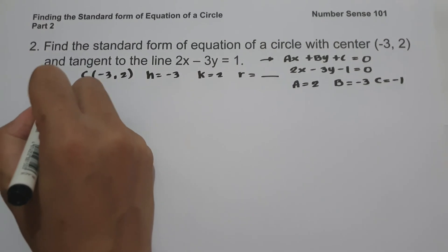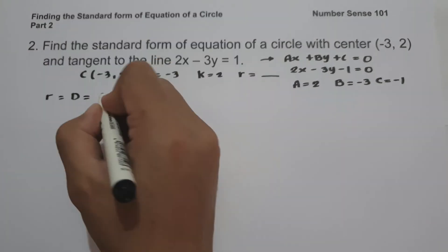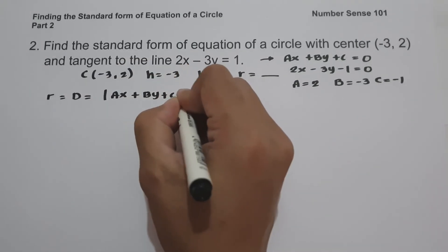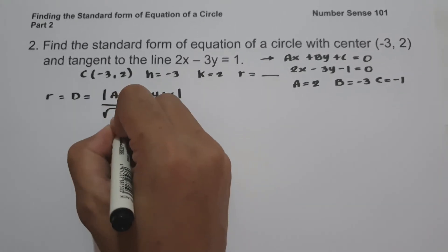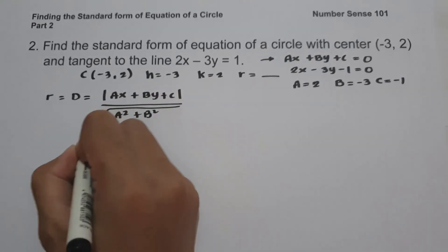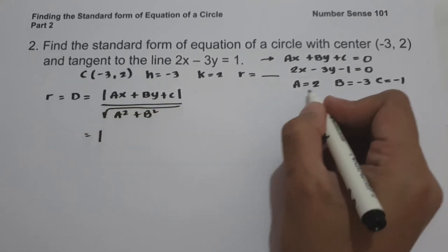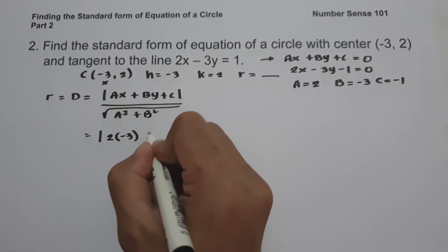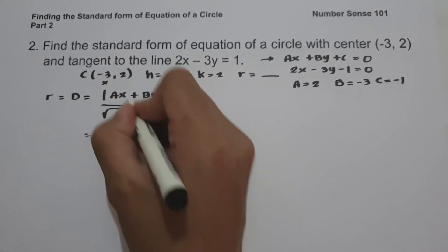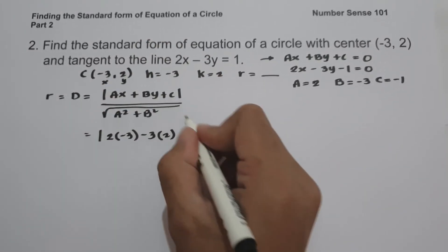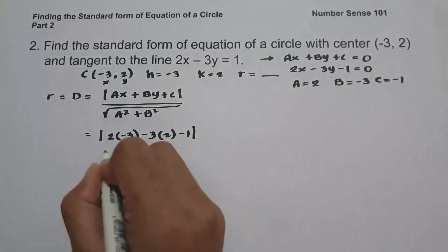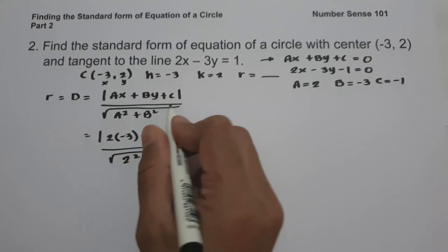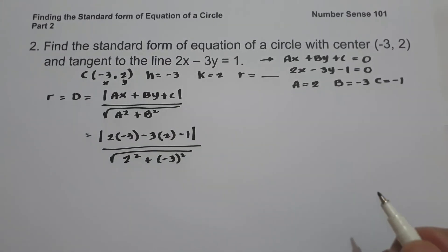To find the radius, we use the formula for the distance between a line and a point: absolute value of ax plus by plus c, all over square root of a squared plus b squared. Substituting: a equals 2, x equals negative 3, b equals negative 3, y equals 2, and c equals negative 1, over the square root of 2 squared plus negative 3 squared. Let us simplify: 2 times negative 3 is negative 6, negative 3 times 2 is negative 6 minus 1, over square root of 4 plus 9.